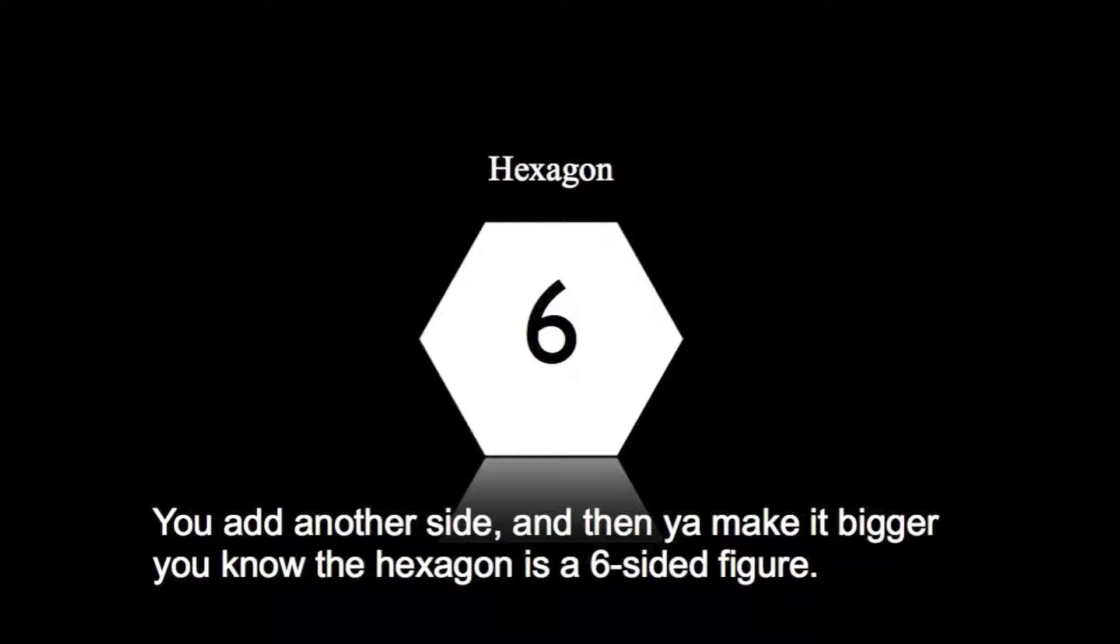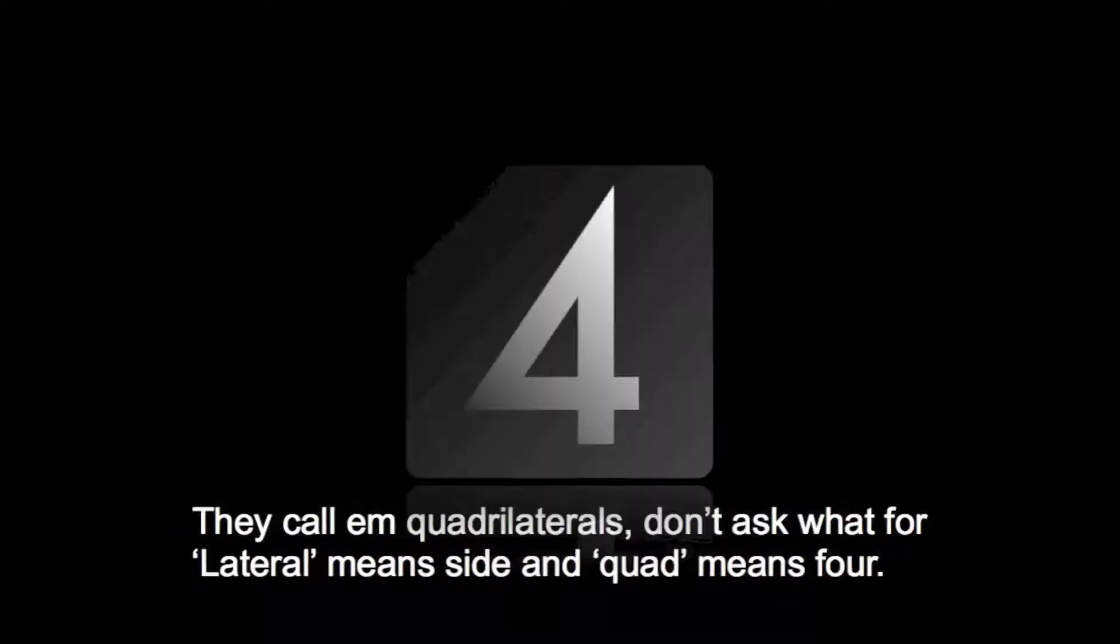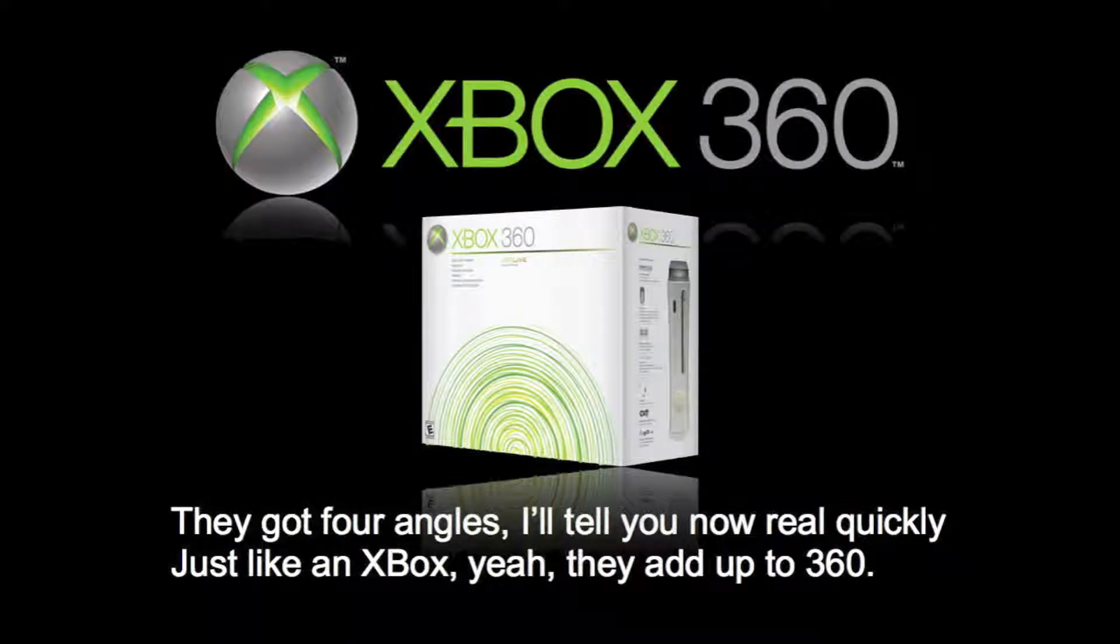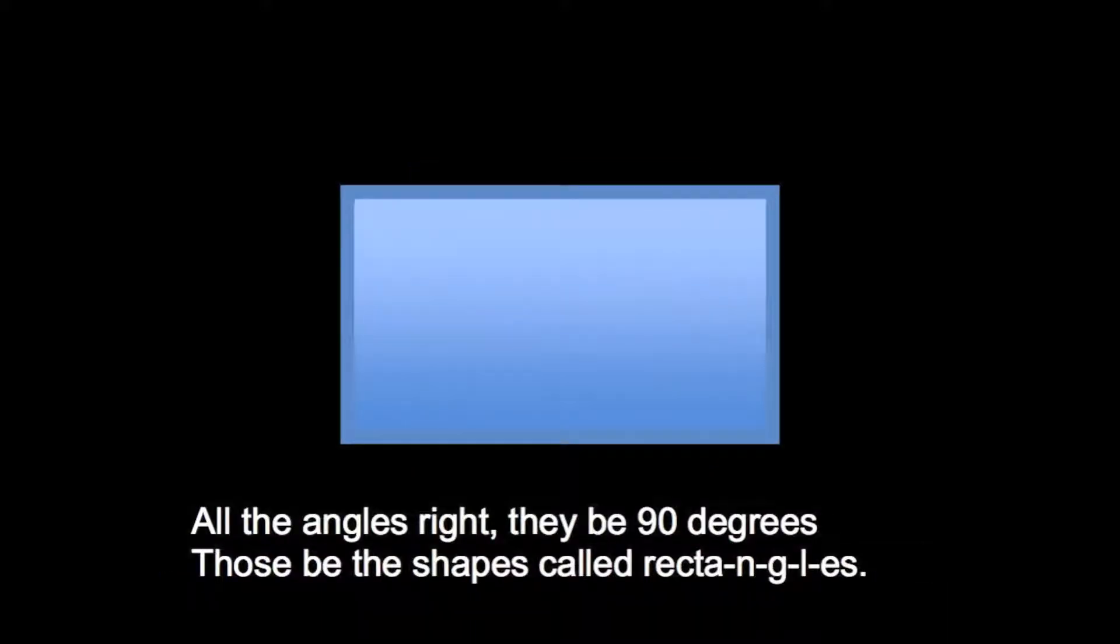You add another side and then you make it bigger. You know the hexagon is a seven-sided figure. It's called a hundred lateral, don't ask them both. Lateral means size and quad means four. They got four angles, I'll tell you now real quickly, just like an Xbox, and they add up to 360. So everything is regular, I mean everything the same. They call that shape a square, alright, that's just a nickname. All the angles right, they be 90 degrees.